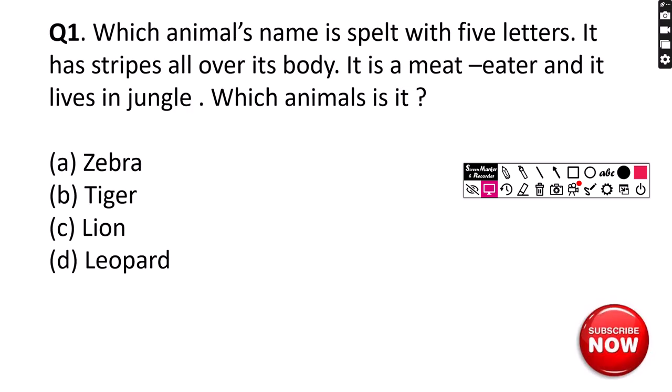Question number 1. Which animal's name is spelled with 5 letters? It has stripes all over its body. It is a meat eater and it lives in jungle. Which animal is it? A. Zebra, B. Tiger, C. Lion, D. Leopard. Correct answer is option B, Tiger.